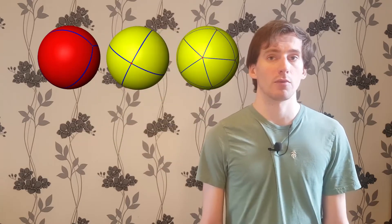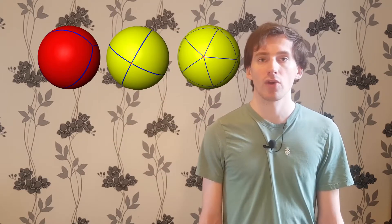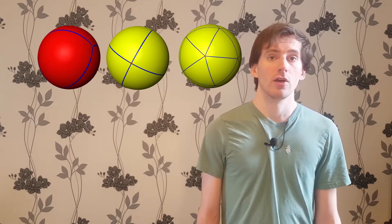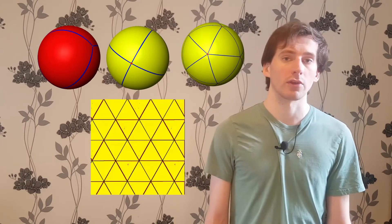For equilateral triangles, the internal angle is greater than 60 degrees, so at most five can fit around a corner. If we put three around a corner, we get this tiling. Four gives this one, and five gives this one. If we try and fit six around a corner, the triangle would have to have internal angles of exactly 60 degrees, and then the triangle would tile the plane, not a sphere.